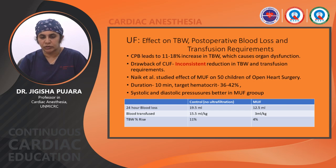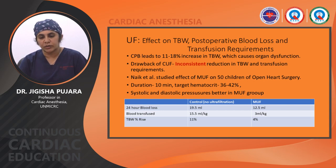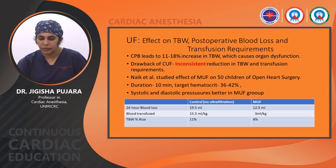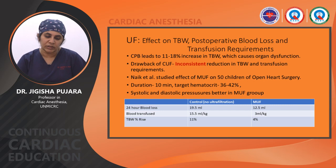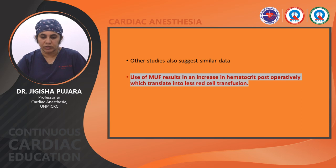Effect of ultrafiltration on total body water, postoperative blood loss, and transfusion requirements: CPB leads to an 11–18% increase in total body water causing organ dysfunction. CUF shows inconsistent reduction in total body water and transfusion requirements. Naik et al. studied the effect of MUF in 50 children undergoing open heart surgery over 10 minutes, targeting hematocrit 36–42%. MUF group showed 24-hour blood loss of 12.5 mL/kg versus 19.5 mL/kg in controls; blood transfusion 3 mL/kg in MUF versus 15.5 mL/kg in controls; and total body water rise of only 4% in MUF versus 11% in controls.